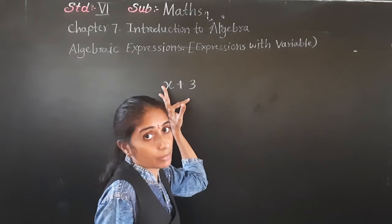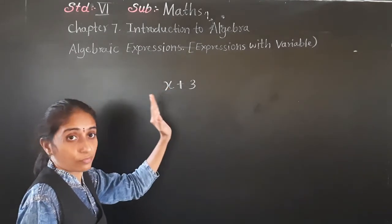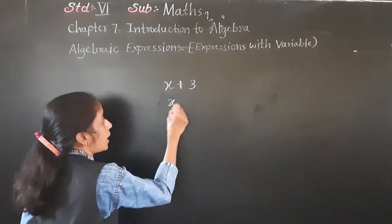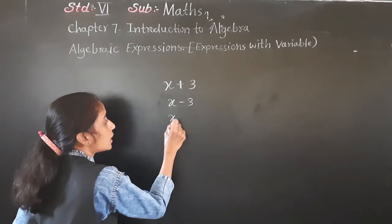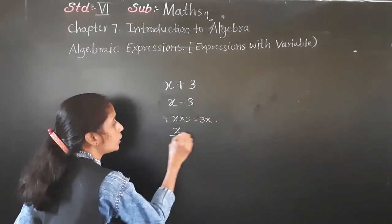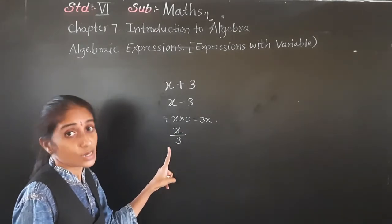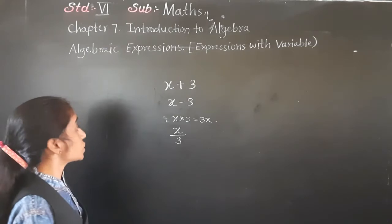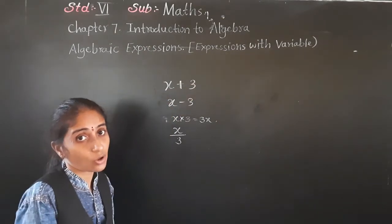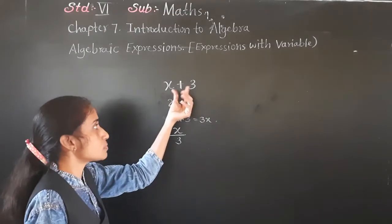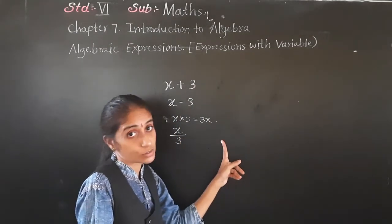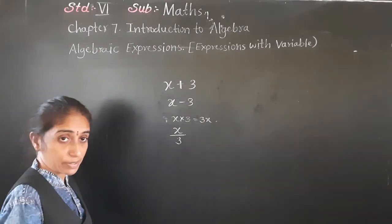An algebraic expression is an expression which has variable and constant with basic four operations. For example: x plus three, x minus three, x multiplied by three (means three x), and x upon three (x divided by three). All of these are algebraic expressions.